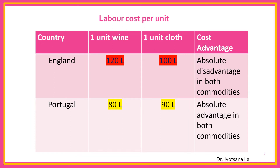In England, to produce one unit of wine 120 labor is required, while for producing one unit of cloth 100 labor is required. At the same time, in Portugal 80 labor is required to produce one unit of wine, and 90 labor is required to produce one unit of cloth.